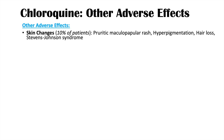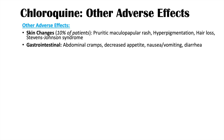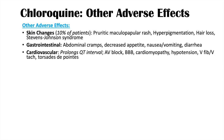The gastrointestinal system can also be affected: abdominal cramps, decreased appetite, nausea, vomiting, and diarrhea. Cardiovascular complications include prolonged QT interval — a significant concern, especially if used with other QT-prolonging medications. Other cardiovascular effects include AV block, bundle branch blocks, cardiomyopathy, hypotension, ventricular fibrillation, ventricular tachycardia, and torsades de pointes related to the prolonged QT interval.